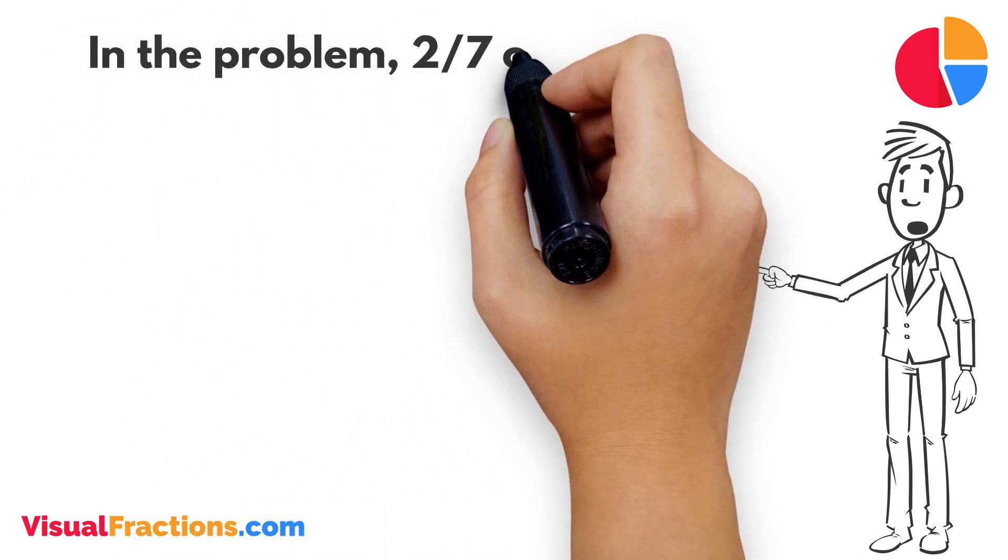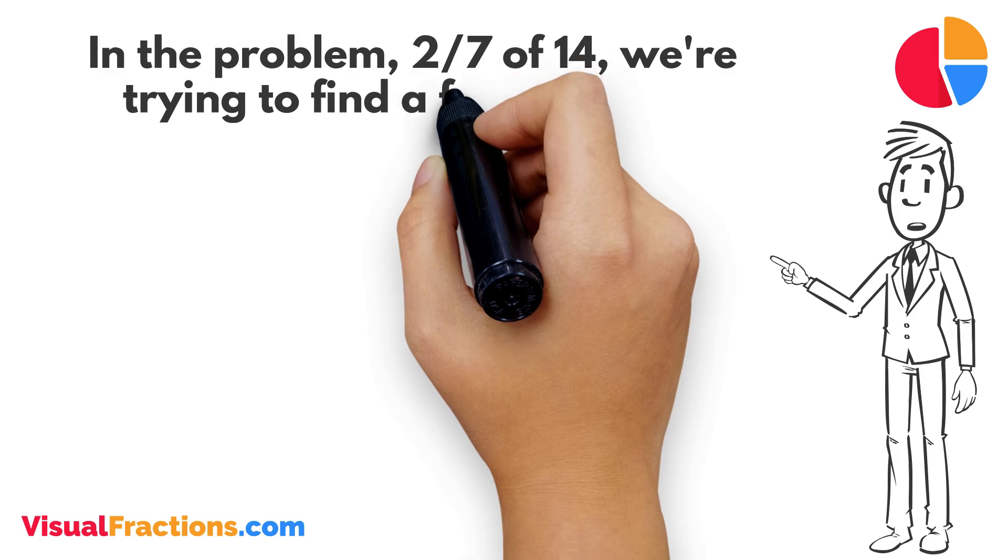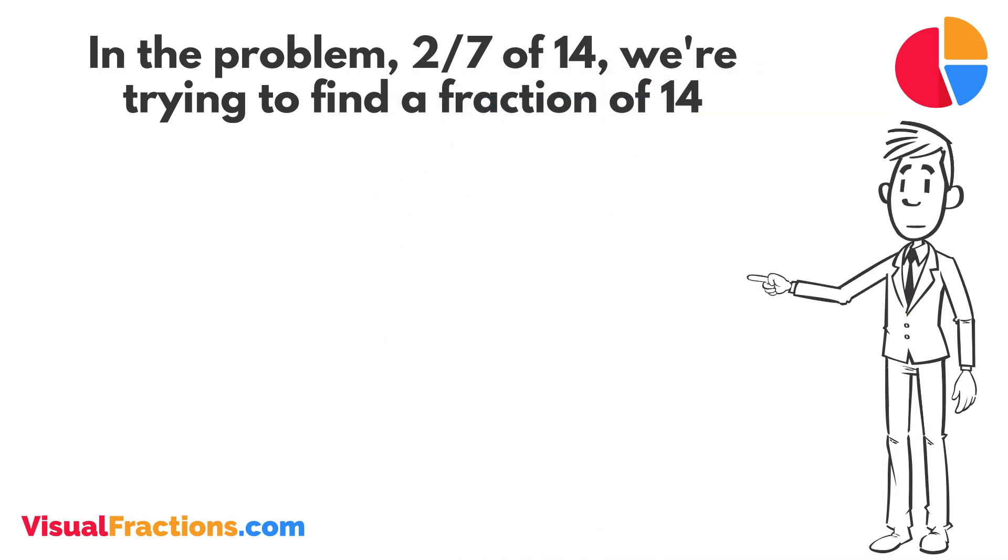In the problem, 2 7ths of 14, we're trying to find a fraction of 14. Since we're only taking a part of it, we know our answer will be less than 14.